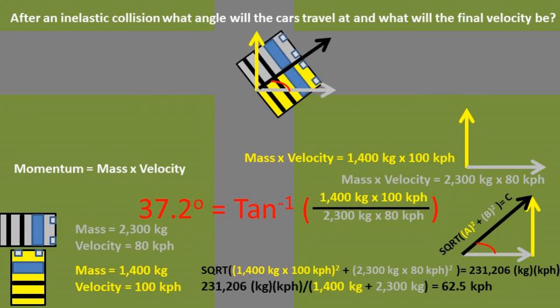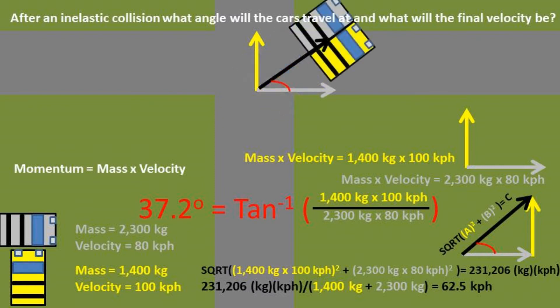Looking at the units, we can see that in order to get velocity, we must divide by the mass total. After dividing by the mass total, we get an answer of 62.5 kilometers per hour for the final velocity after the collision.